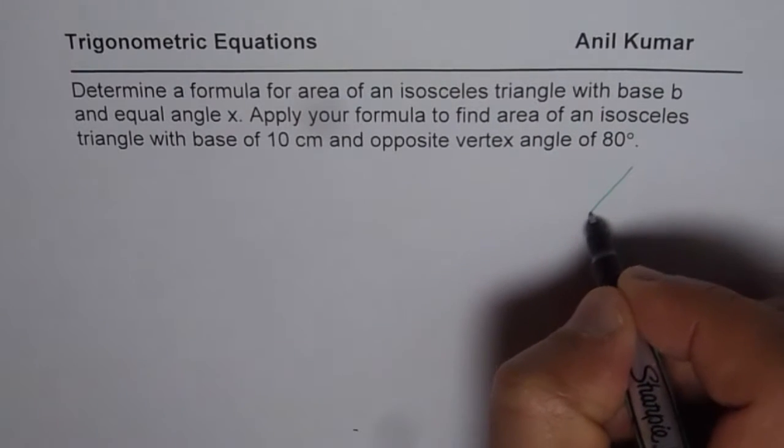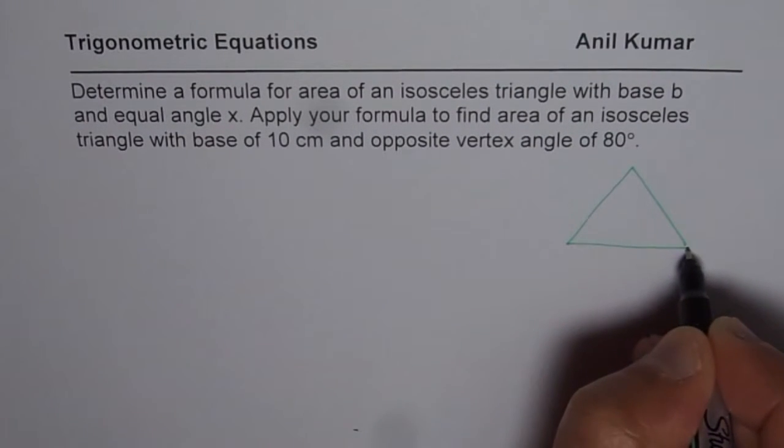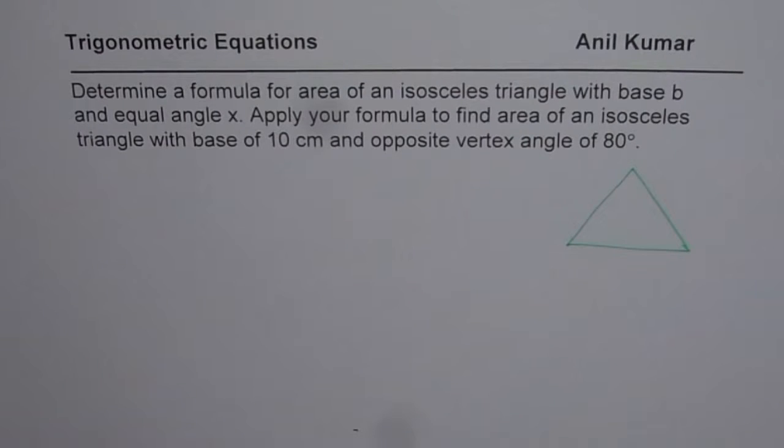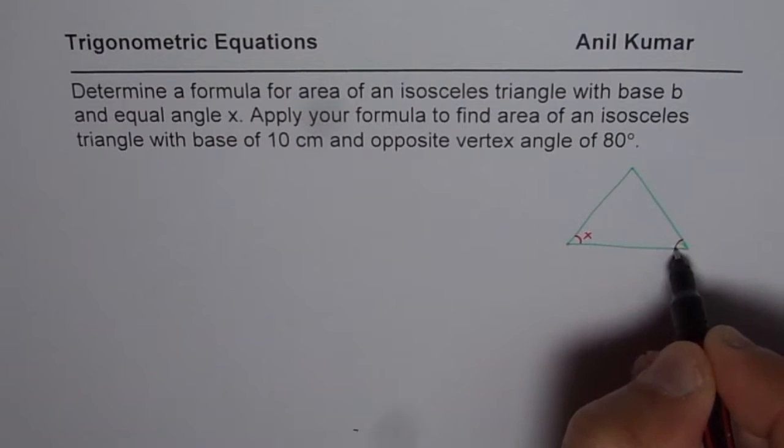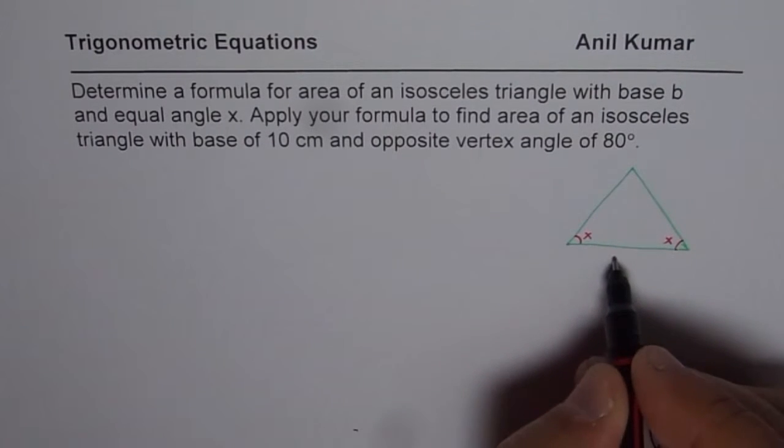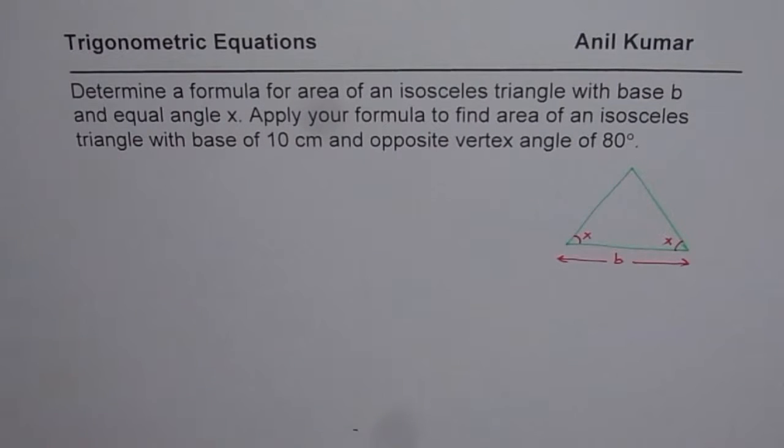So what we are given here is a triangle. Let us say this is an isosceles triangle, that means the two angles are equal and these angles are x for us. Now base b means this side is b for us. So that's the triangle given to us.